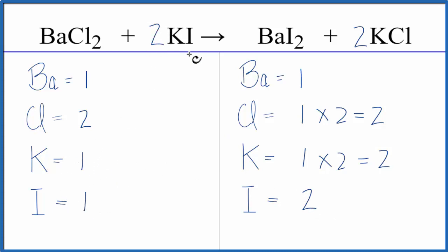And if we put a coefficient of two in front of the KI, one times two, that gives us two potassiums. Those are balanced. One iodine times the two, that gives us two. And we're done.